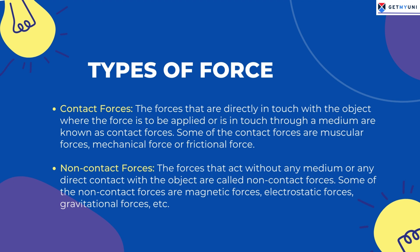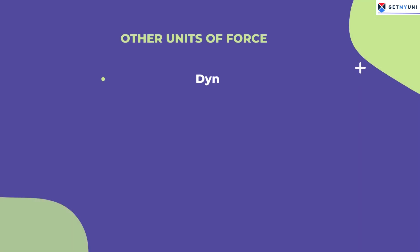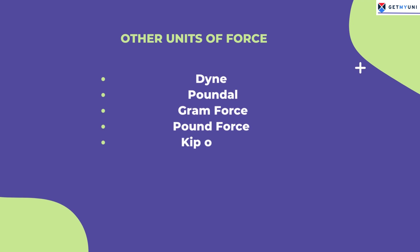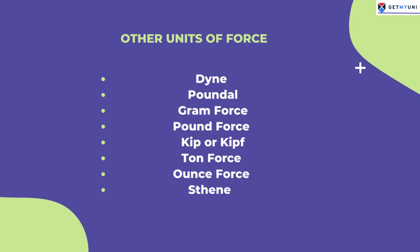There are other units of force apart from Newton. Newton is the SI unit of force, whereas in the foot-pound-second system, where mass is measured in pounds, the unit of force is called poundal. Pound-force is used to express force dependent on gravitational forces. Other units include dyne, gram-force, poundal, and kilogram-force.